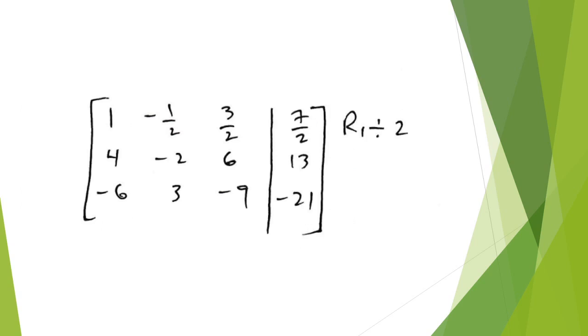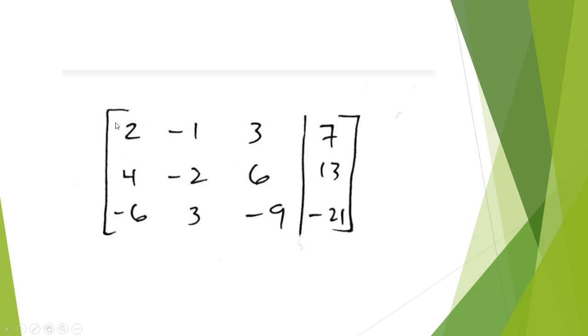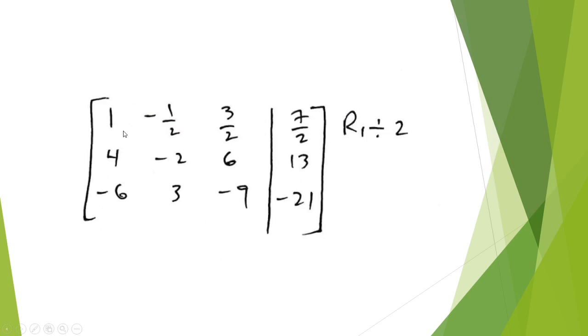Alright, so in the second step, we divide row 1 by 2. And the reason for that is, we want to achieve 1's diagonally. So to get the first element to be 1, we've got to divide 2 by 2. So you've got to divide the whole row by 2, and that's what we did here. So 2 divided by 2 gives you this,